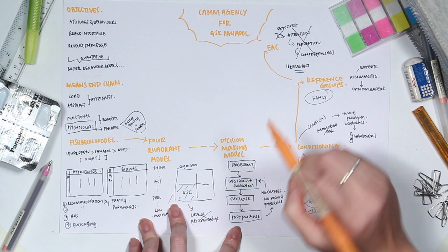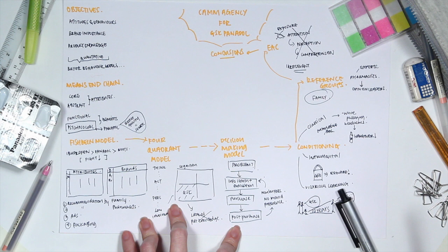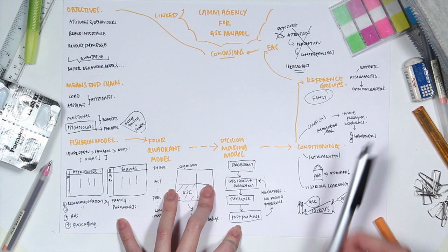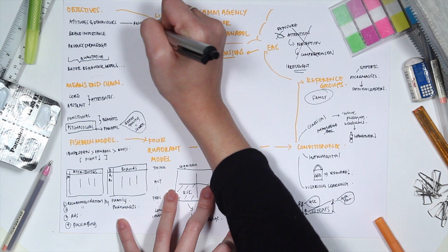In conclusion, from the findings and based on the three objectives, we found that firstly, the most important selection criteria was the recommendations by family, followed by pharmacists, followed by advertising and lastly packaging.